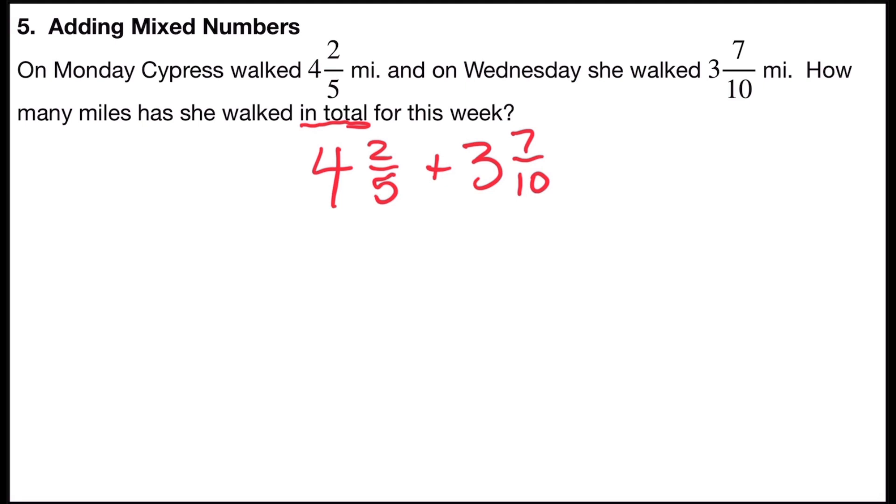Like the last problem, I'm going to change these into fractions. Four times five is twenty, plus two is twenty-two-fifths, plus ten times three is thirty, plus seven is thirty-seven back over ten.